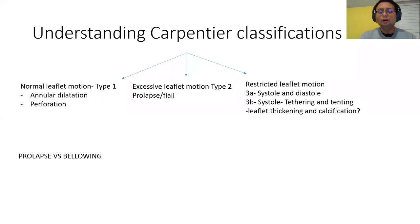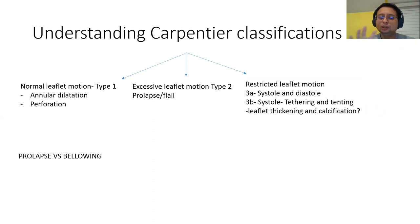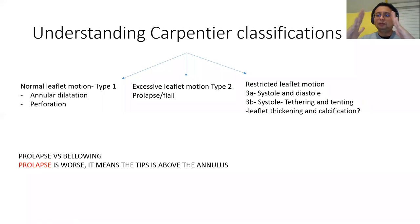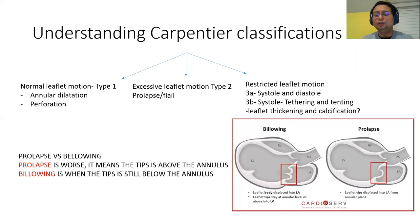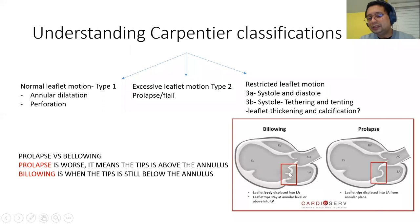The difference between prolapse and billowing: both refer to primary mitral valve prolapse. In billowing, the tips of the leaflets at coaptation are still below the annulus level. In prolapse, the tips of the leaflet at coaptation are above the level of the annulus. Prolapse is therefore considered worse than billowing.